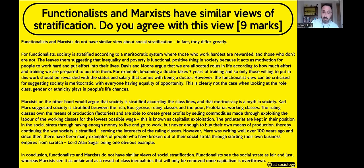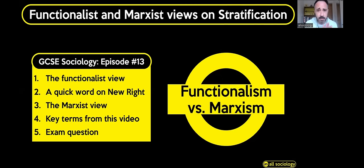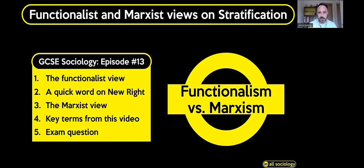To recap what we've done today: we looked at the Functionalist view of stratification, particularly focusing on Parsons' idea of meritocracy and Davis and Moore's concept of role allocation. We looked at the New Right very briefly, mentioning Peter Saunders. We covered the Marxist view — society stratified according to class lines, the distinction between the bourgeoisie and the proletariat, the means of production, and the exploitation of the working class. Then we went through key terms and finished with a nine mark exam question.